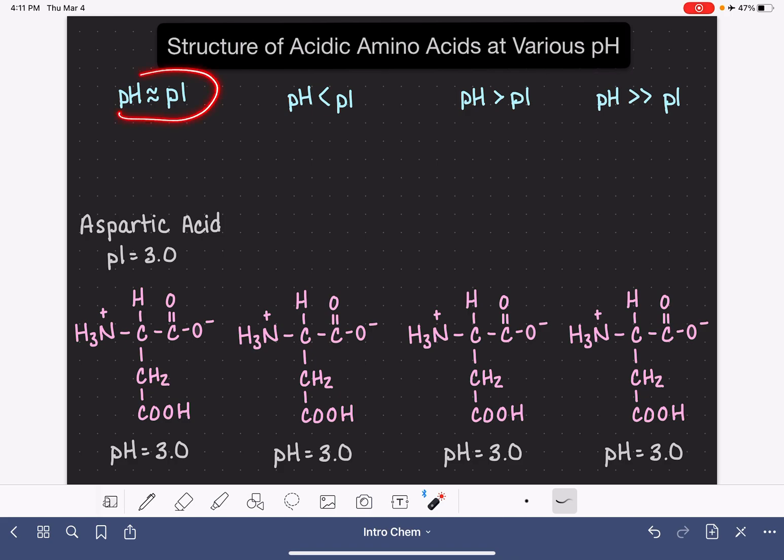Starting with the pH that's roughly the same as the pI, here we have our aspartic acid with a pI of 3.0 in a pH of 3.0. When the pH is about the same as the pI, the amino and the acid groups are existing as a zwitterion. So we have our COO minus and we also have our NH3 plus. You can see from the drawing that I have there that the R group has the COOH version of the acid.